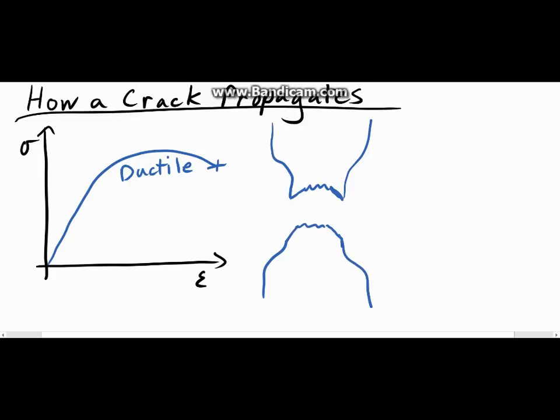And both this necking right here and the 45 degree angle from the loading direction, if it was loaded up like this under stress, the 45 degree angle from the loading direction tells us that this is a ductile fracture because ductile materials deform through shear.